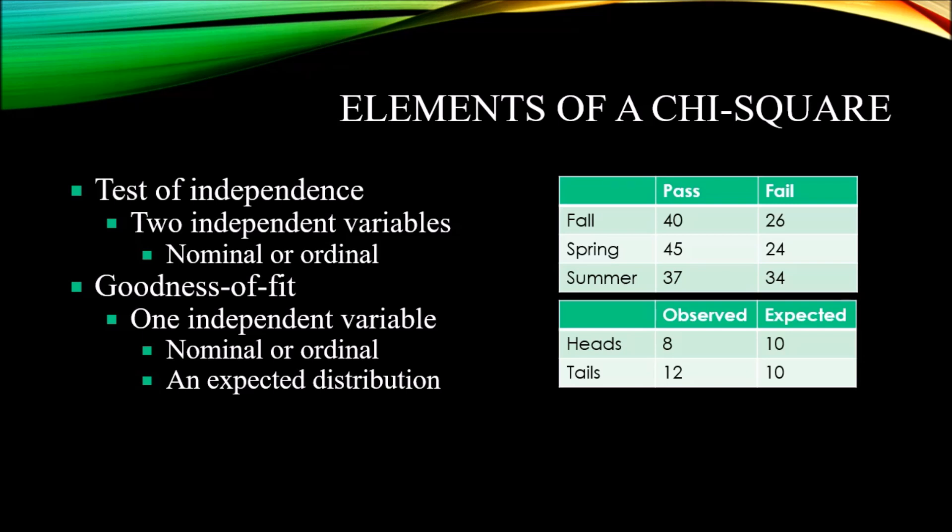The ordinal level of measurement has all the characteristics of the nominal level of measurement, except the observations can be ranked. The distance between the observations, however, still does not have meaning like you would see at the interval or ratio level of measurement. At the ordinal level, you could consider first, second, and third in a race. You know who finished first, second, and third, but you don't know how much distance there was between the first and second place finish and the second and third place finish. They're ranked, but the distance is not meaningful.